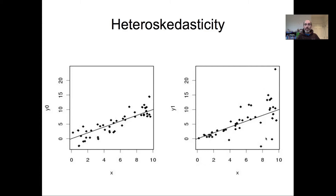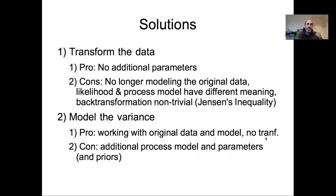How do we deal with heteroscedasticity? There are two commonly used solutions. The first, often taught at an introductory level, is transforming our data to try to make the variance equal. One advantage is that you don't need additional parameters. But the negative is that we're no longer modeling the original data — we're modeling a transformation of it, so our likelihood and process model will have a different, often unintuitive, meaning.